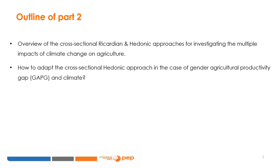Welcome to this new module. We continue with the analysis of the impact of climate change on the gender agricultural productivity gap for smallholder farmers. In this module, we will present an overview of the cross-sectional Ricardian and hedonic approaches for investigating the multiple impacts of climate change on agriculture, and we will show how to adapt the cross-sectional hedonic approach in the case of the gender agricultural productivity gap and climate change.